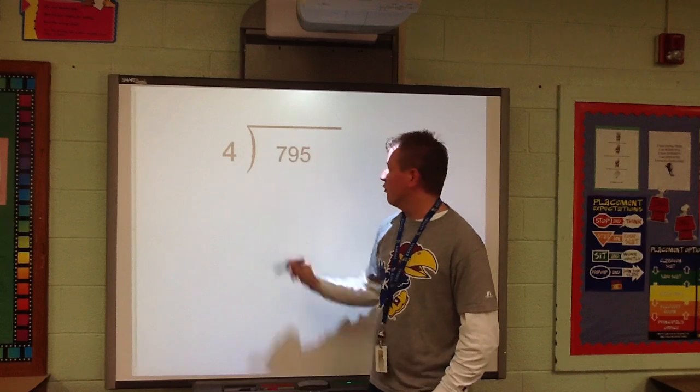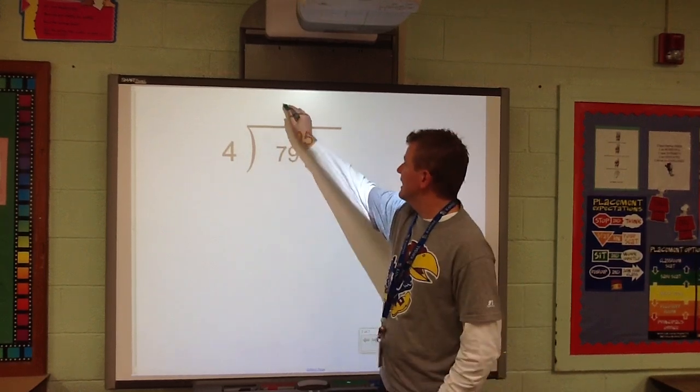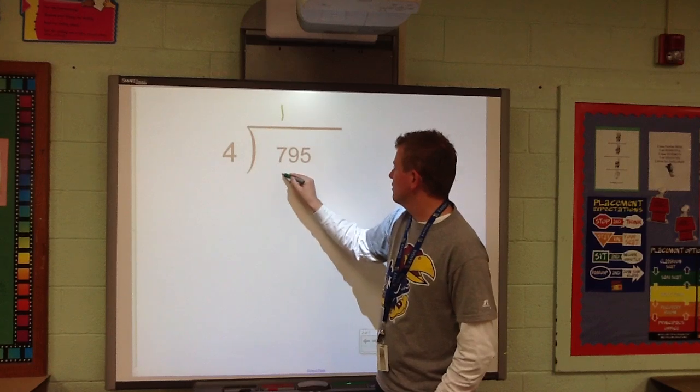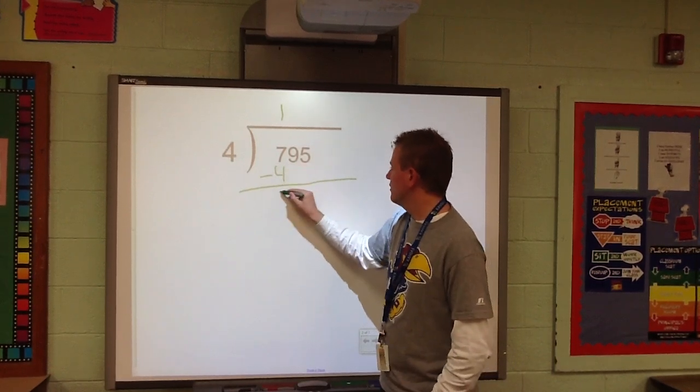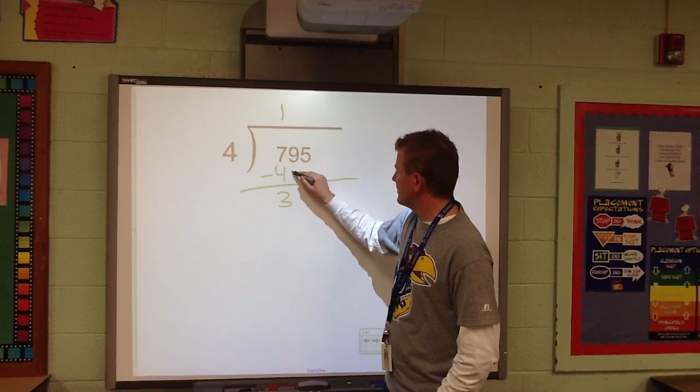$795 divided by 4. Does 4 go into 7? It sure does. One time. 1 times 4 is 4. 7 minus 4 is 3. And I'm going to bring down my 9.